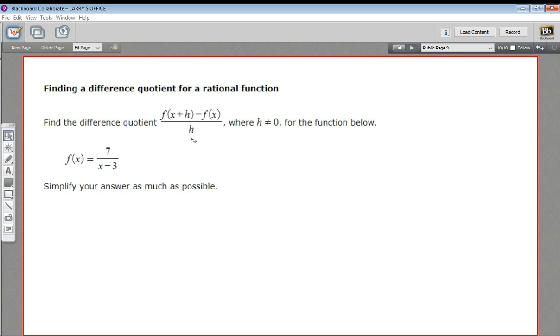The formula for a difference quotient here is f of x plus h minus f of x over h, where of course h can't be 0 because it's the bottom of a fraction.